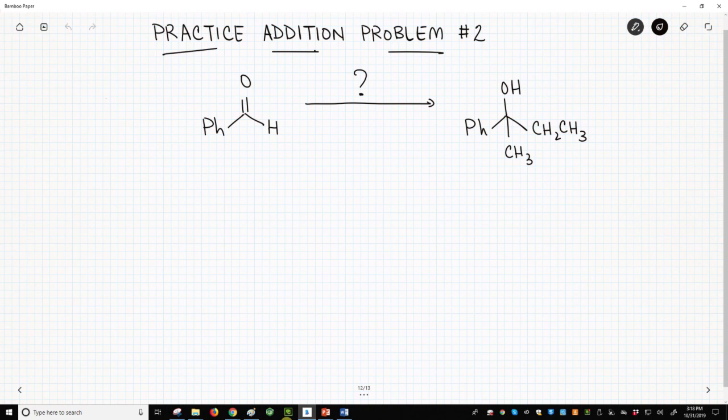Our starting material is on the left and our product is on the right. This is strange because it looks like two groups have been added to our carbonyl. That's impossible. You can only add one group to a carbonyl because a carbonyl has only one pi bond.